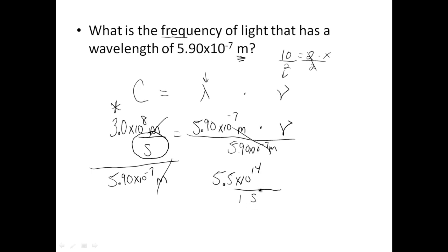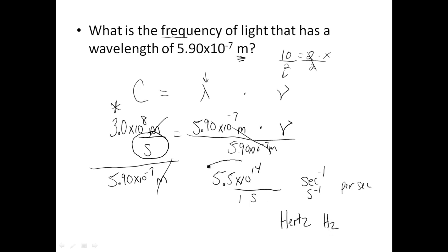The other ways you could write your units: 5.5 times 10 to the 14th seconds negative 1, or S to the negative 1 — that tells you it's per second. You could also write it as per second, or you could write hertz (H-E-R-T-Z), which means per second. Any of these units would be fine as long as it indicates how many waves go by in one second.